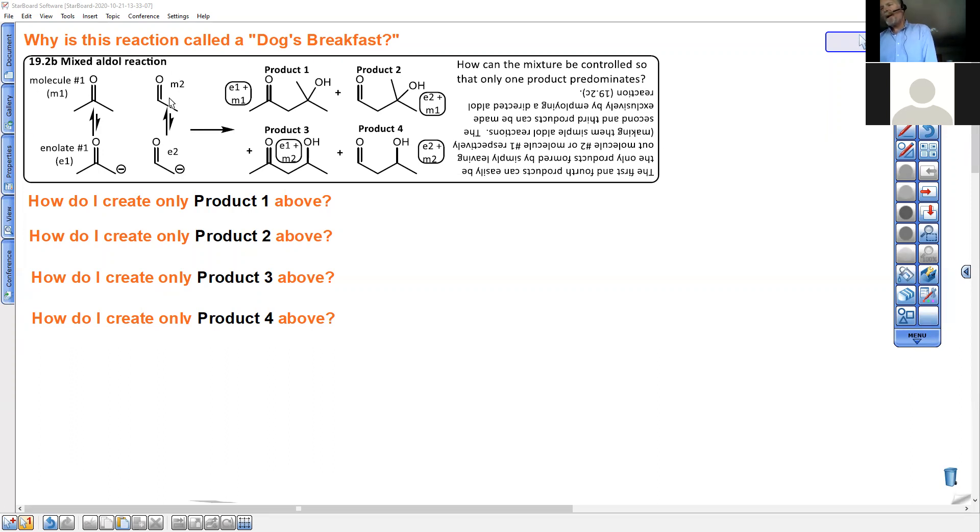And the four products that would result, the aldol reaction products, are listed here. This would be the result of the enolate of molecule one reacting with molecule one. That's where this comes from. And then after the protonation step to regenerate the catalyst, you'd have this aldol reaction product.